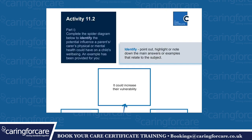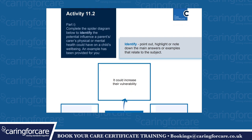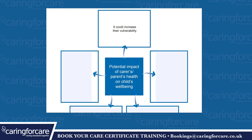Activity 11.2. Complete the spider diagram below to identify the potential influence a parent's or carer's physical or mental health could have on the child's wellbeing. An example has been provided for you. Identify — point out, highlight, or note down the main answers or examples that relate to the subject. Potential impact of a carer's or parent's health on the child's wellbeing. The example given: it could increase their vulnerability.